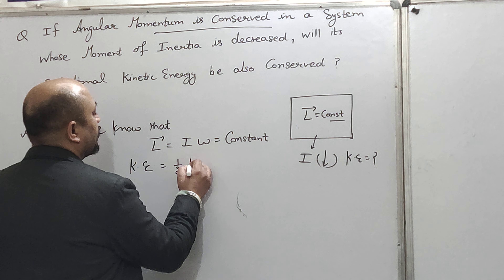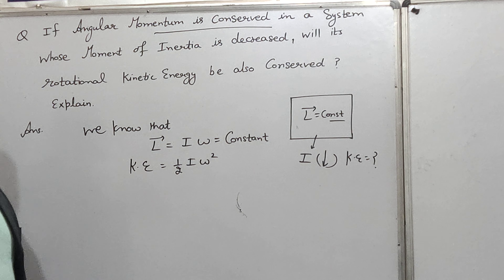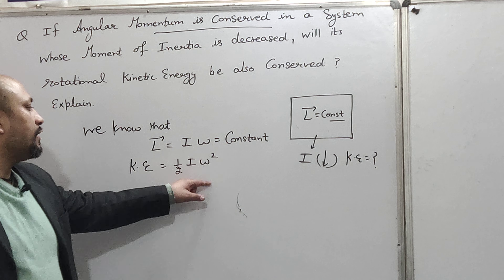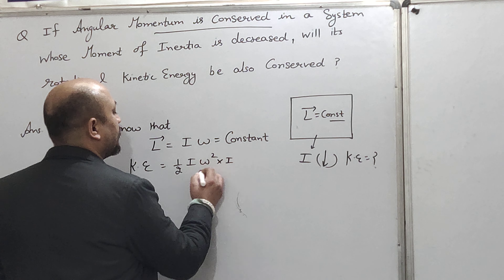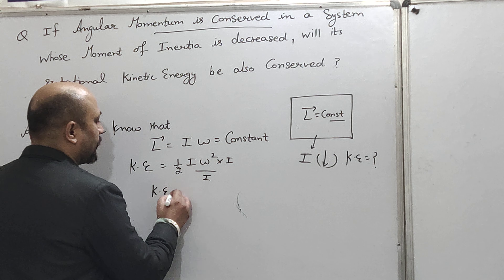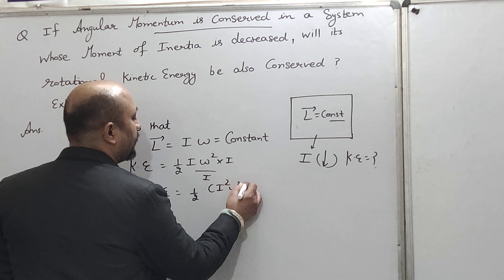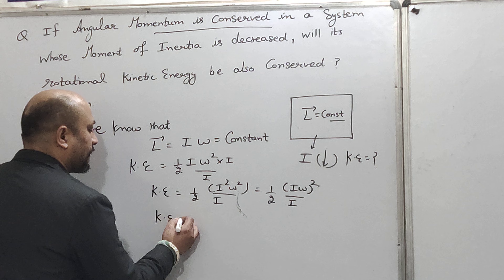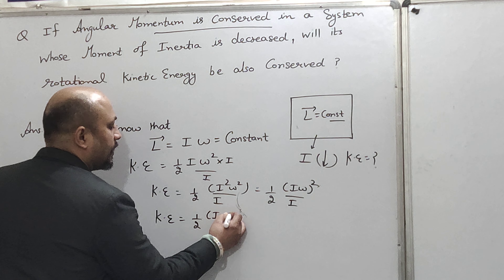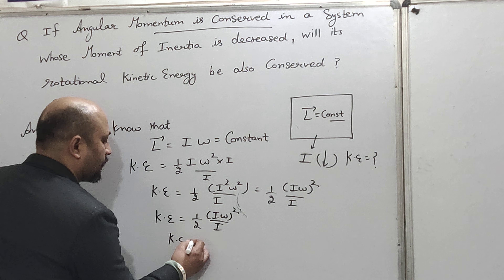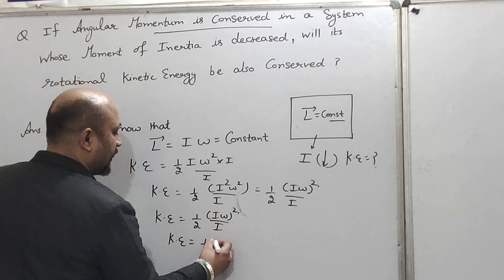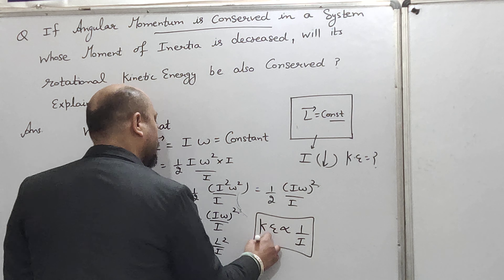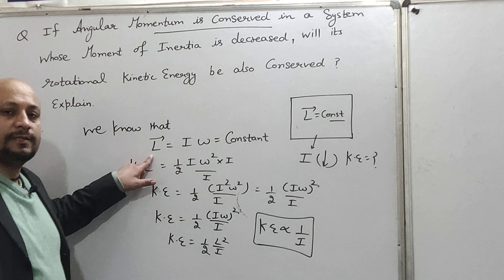Now, the kinetic energy of rotation — as we discussed in a previous video — is half I omega squared (KE = ½Iω²). If we multiply both numerator and denominator by I, the kinetic energy of rotation becomes: KE = ½I²ω²/I = ½(Iω)²/I. Now, Iω is equal to L, so kinetic energy of rotation is L²/2I. Since L is constant, kinetic energy is inversely proportional to the moment of inertia.